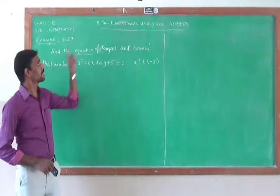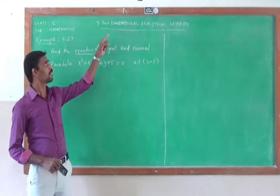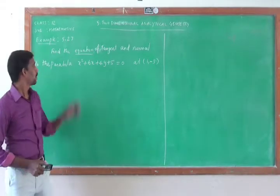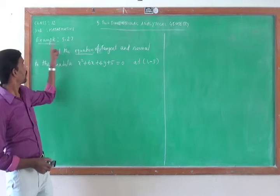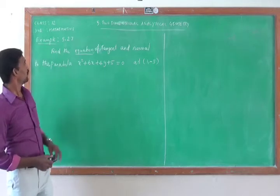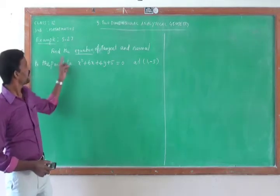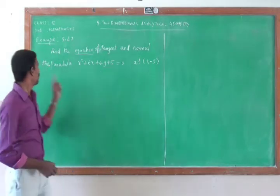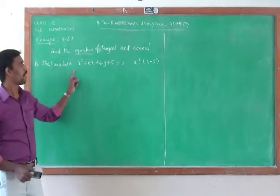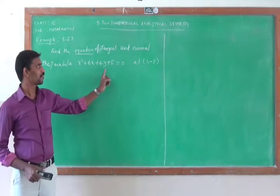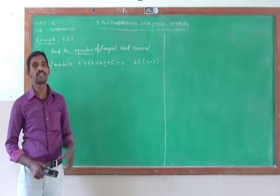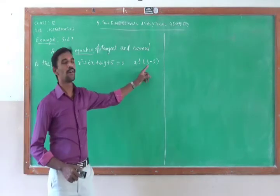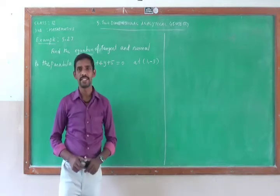This is Professor Mathematics, chapter number 5, two-dimensional non-Cartesian geometry. Now the question, example 5.27: Find the equation of tangent and normal to the parabola x squared plus 6x plus 4y plus 5 equal to 0 at the point (1, minus 3).